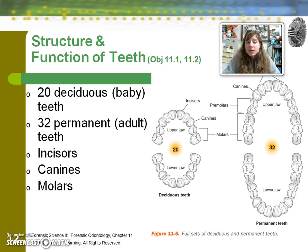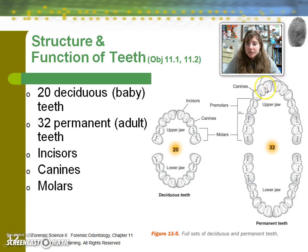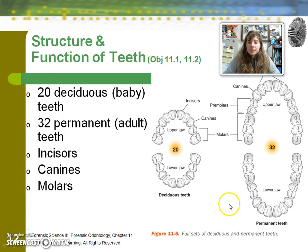Your baby teeth are also called your deciduous teeth, and there are a total of 20 of them. Then there are 32 adult or permanent teeth, and that includes your wisdom teeth — so a lot of people are actually walking around with 28. These are divided into incisors, which are the frontmost teeth, then canines, which are generally the pointy teeth, premolars, and then molars in the back.